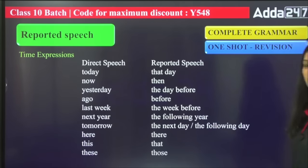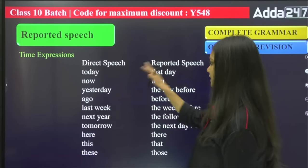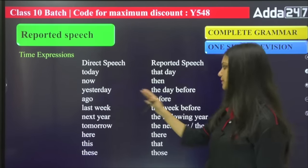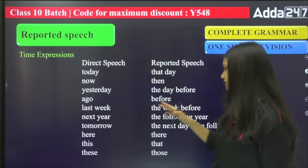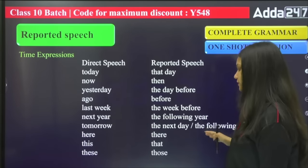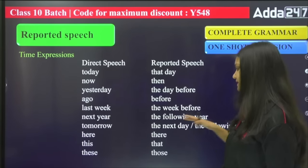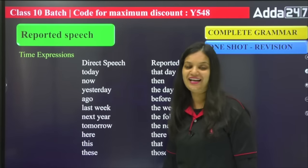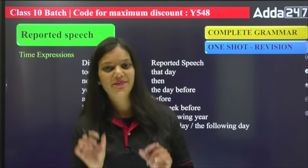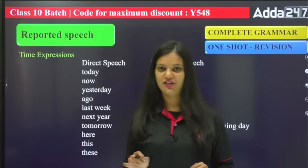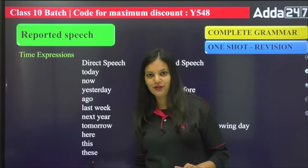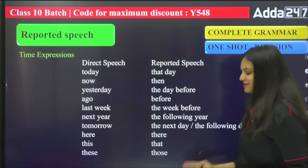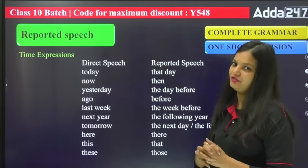Here is the time expression table: 'today' changes to 'that day,' 'now' changes to 'then,' 'yesterday' changes to 'the day before,' 'ago' changes to 'before,' 'last week' changes to 'the week before,' 'next week' changes to 'the following week,' 'tomorrow' changes to 'the next day,' 'here' changes to 'there,' 'this' changes to 'that,' 'these' changes to 'those.' We will see these words in the direct sentence and convert them accordingly in the indirect sentence.